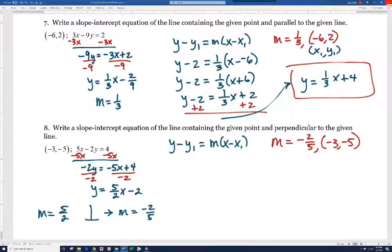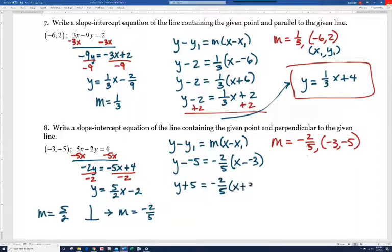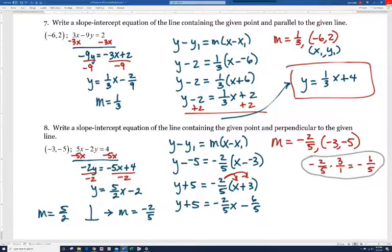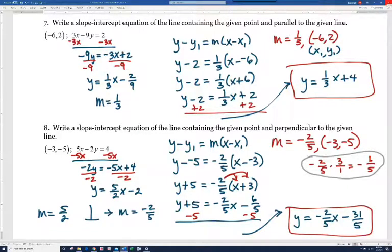We're going to use the point-slope form, and we're going to use a slope of -2/5 and the point (-3, -5). Let's plug in the numbers. We get y - (-5) = -2/5(x - (-3)). Let's change that x minus negative 3 to x + 3. Then let's distribute on the right side. -2/5 times x is -2/5 x, and -2/5 times 3 is -6/5. Let's get y by itself. We'll subtract 5 on both sides. We get y = -2/5 x - 31/5.